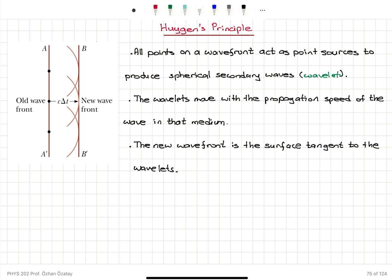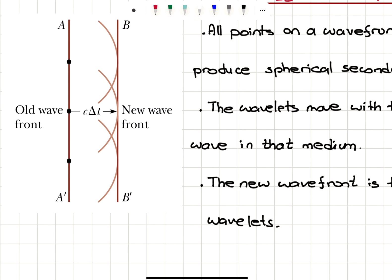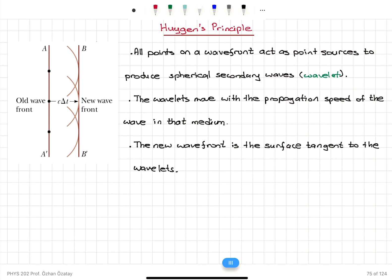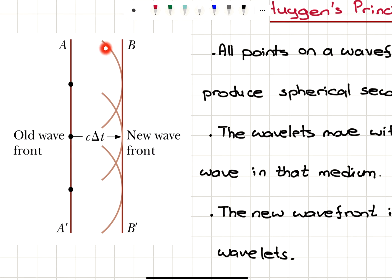The wavelets move with the propagation speed of the wave in that medium. So if this is in vacuum or air, the wavelet will move a distance C·ΔT in a time interval ΔT. The new wavefront is the surface tangent to the wavelets, so these spherical wavelets will have a tangent producing this new wavefront.